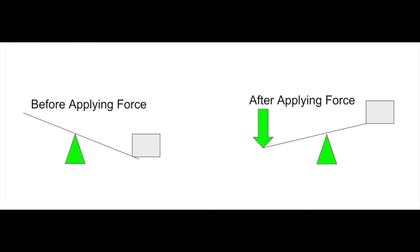If the fulcrum is exactly in the middle, there's no mechanical advantage. It requires the same force to push down on one side as it is to lift up on the other. However, when the fulcrum is not in the middle, you can get a mechanical advantage.